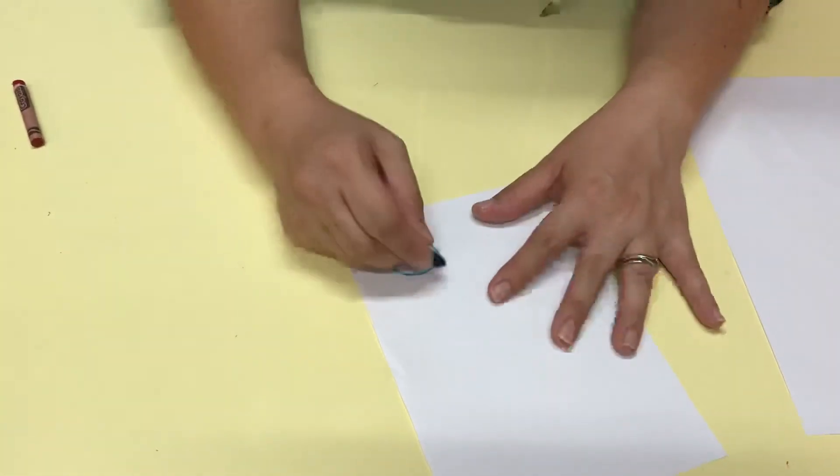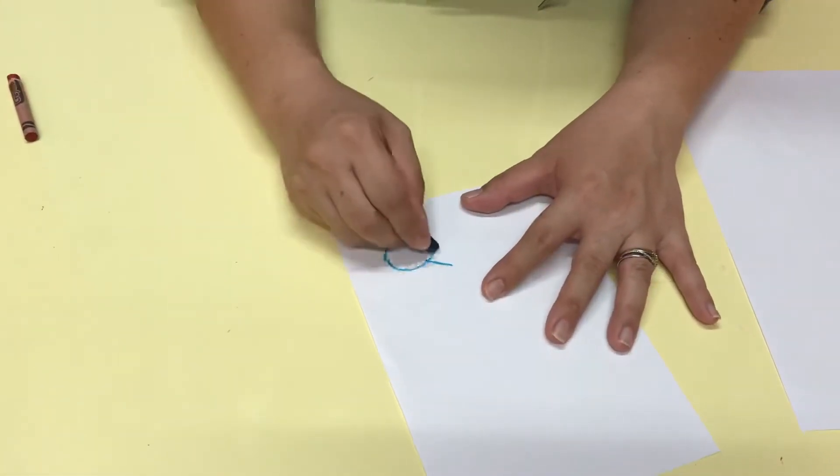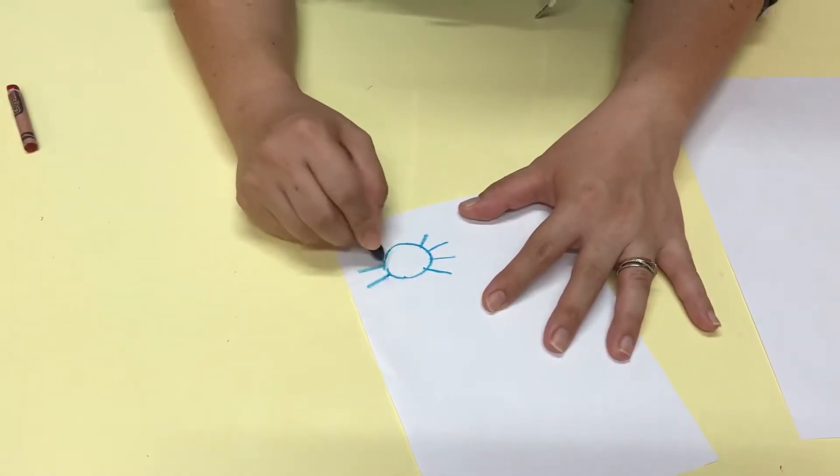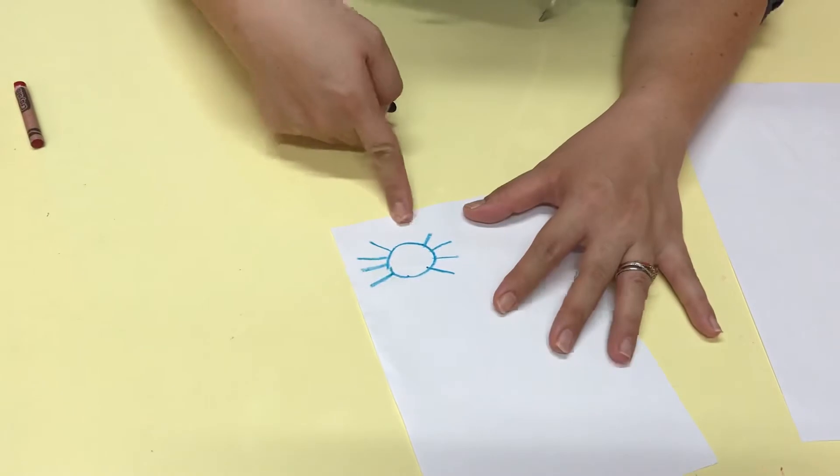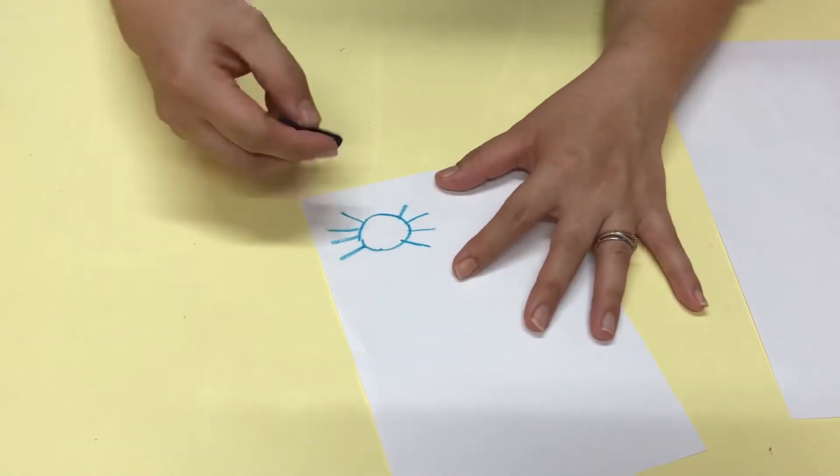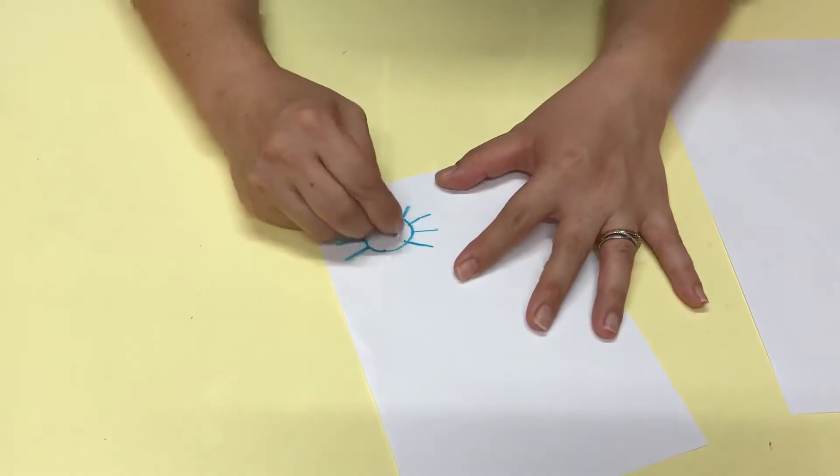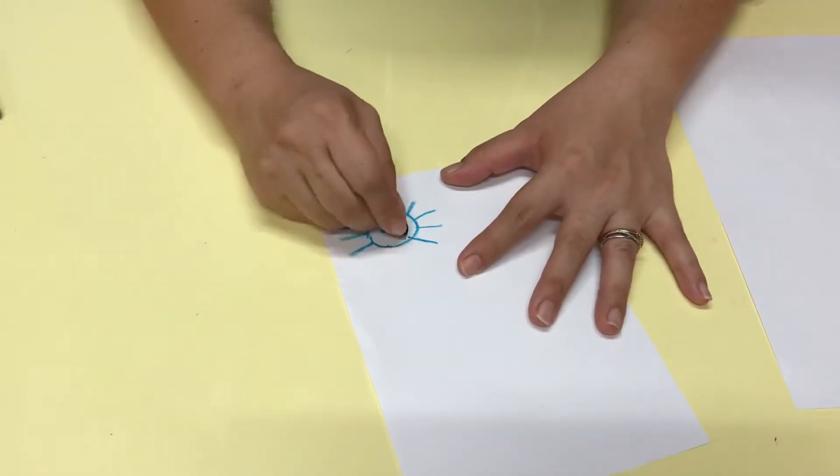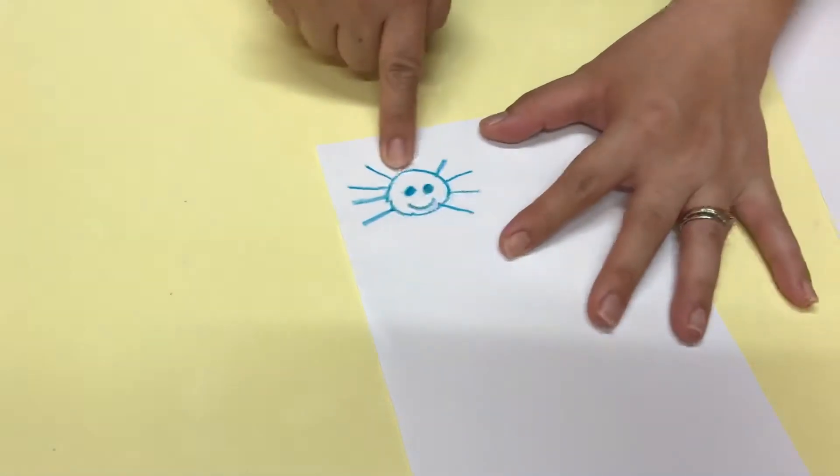One, two, three, four. One, two, three, four. Now it looks like a sun, right? So we need to draw some eyes, very cute, and a mouth. And look, it's a spider!